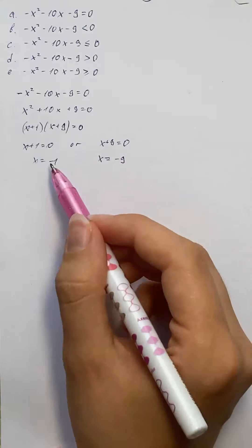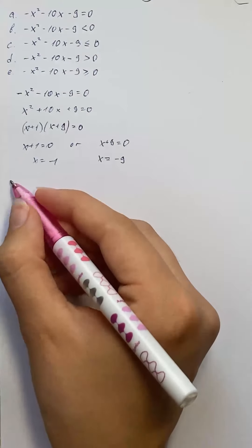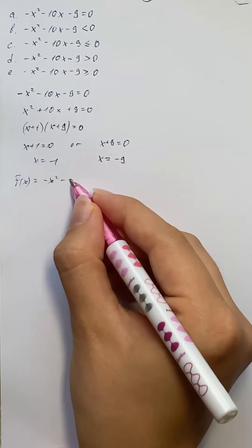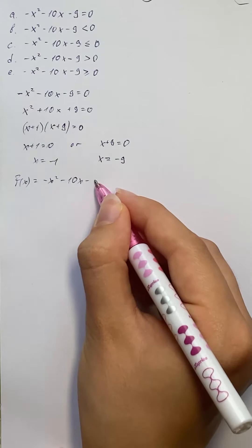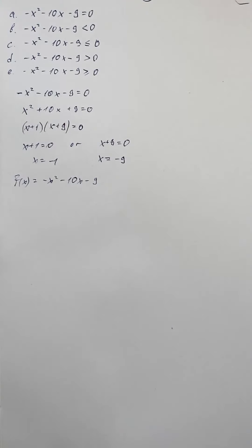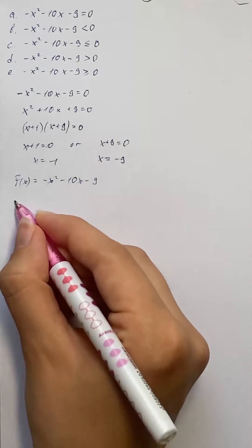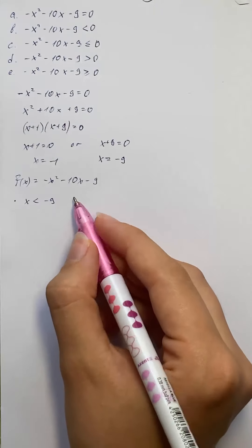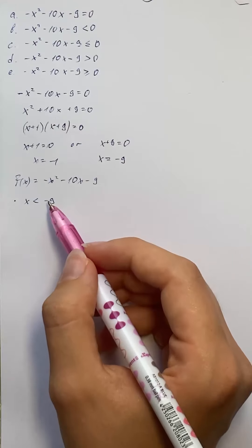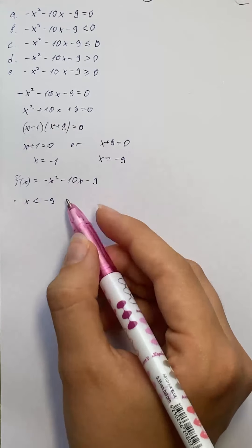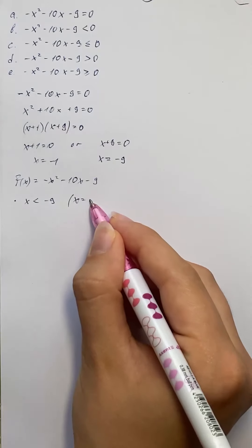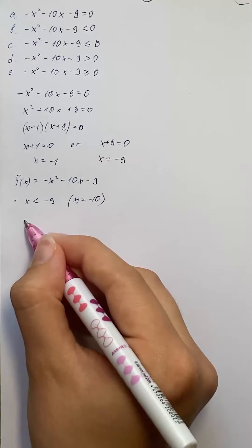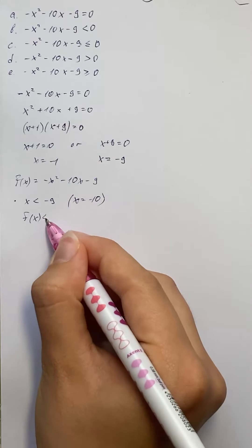These are our boundary points. Now we're going to evaluate our function, which is negative x squared minus 10x minus 9. The first interval is x less than negative 9. We select a test point to determine whether our function is negative or positive. Let x equal negative 10, and we get that our function is negative on this interval.